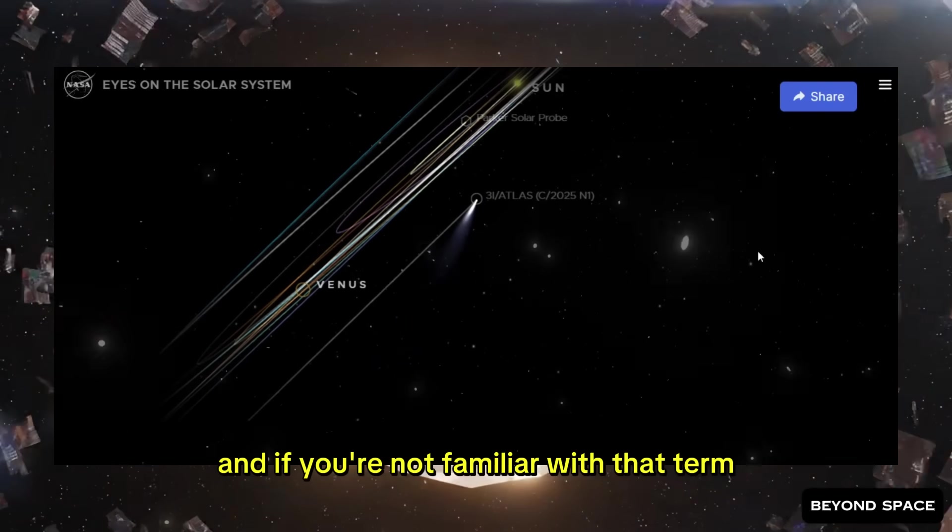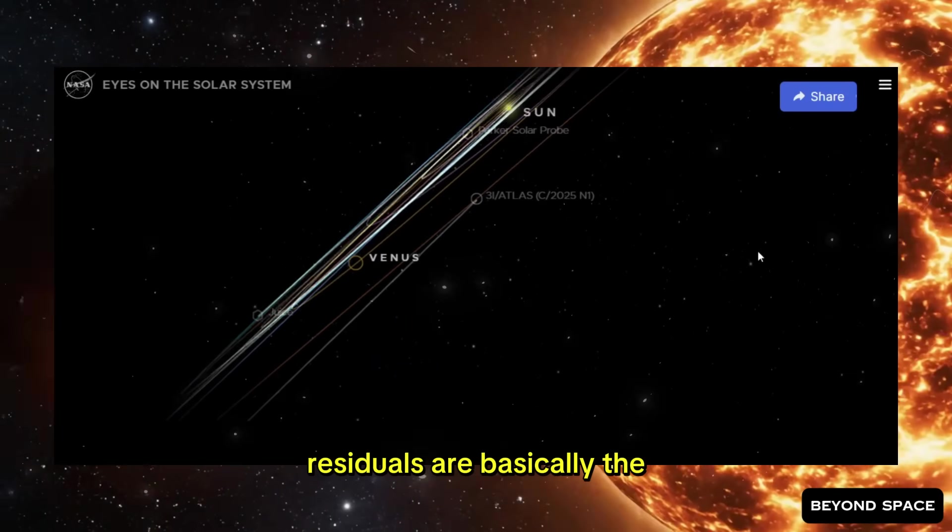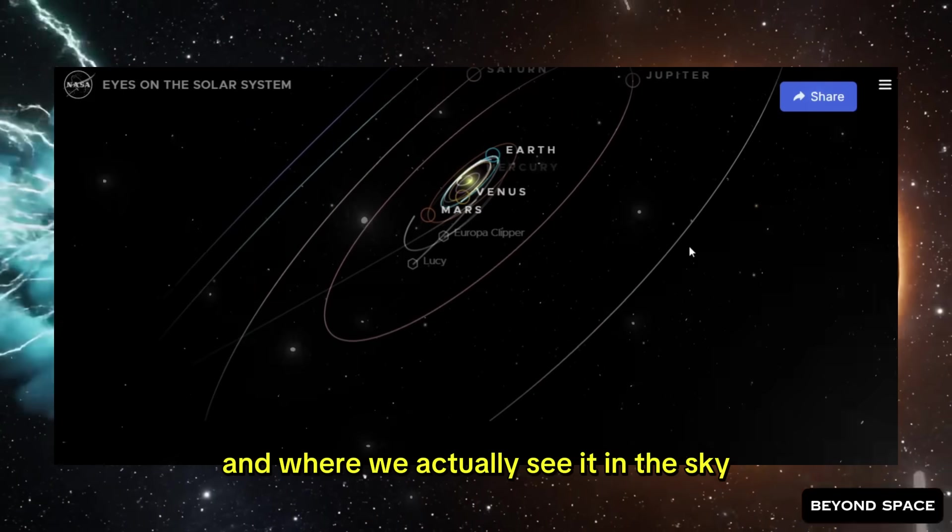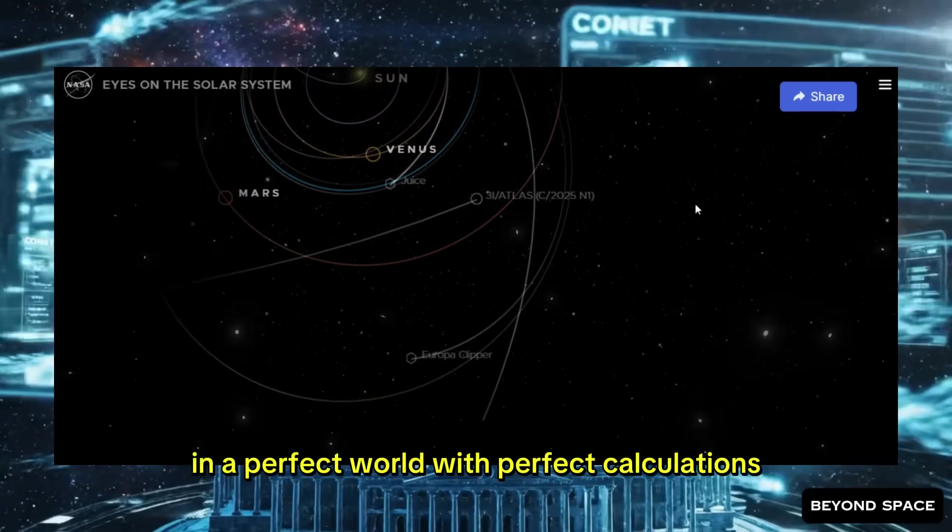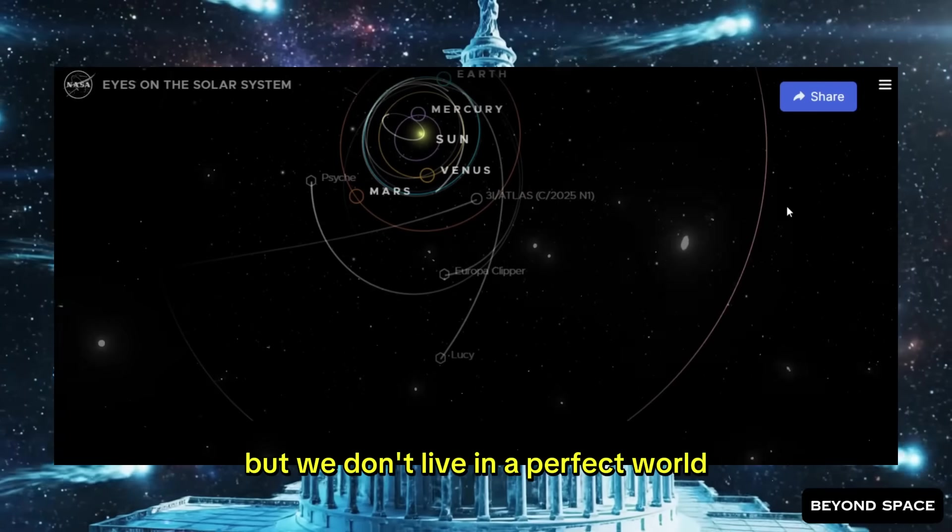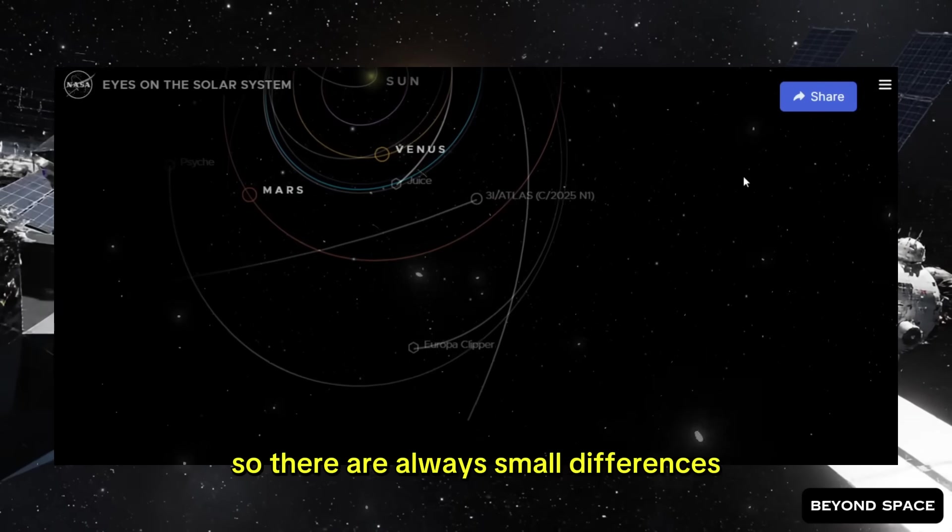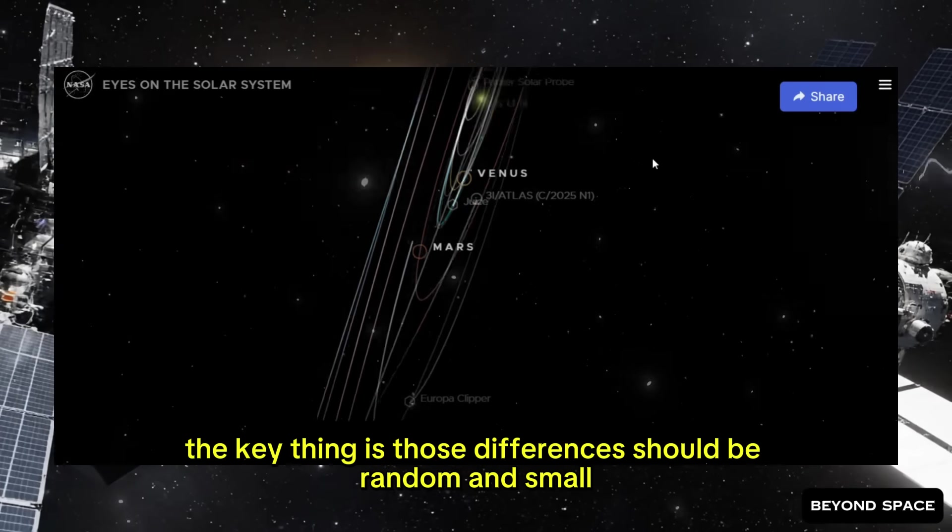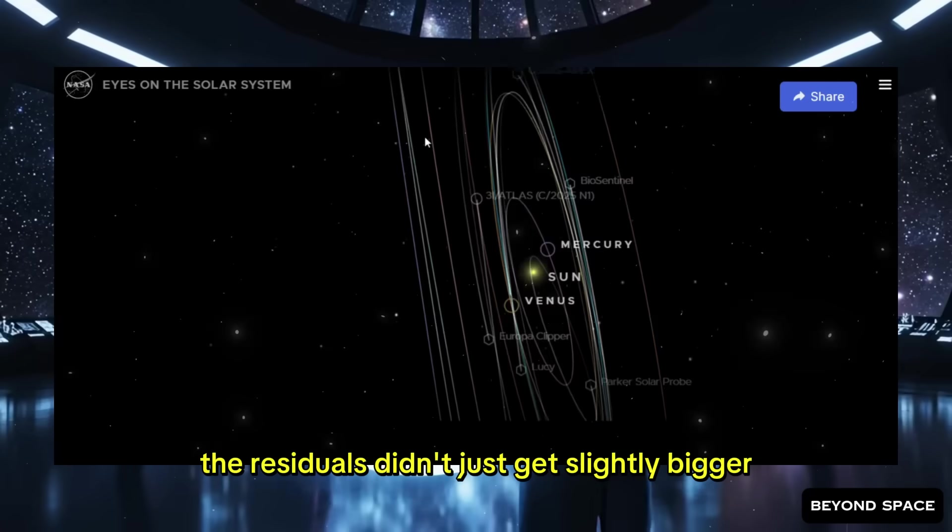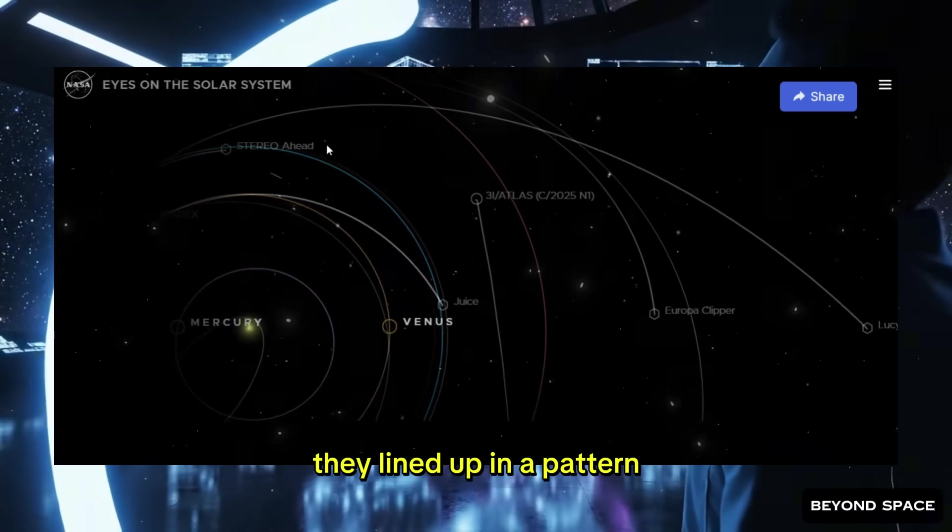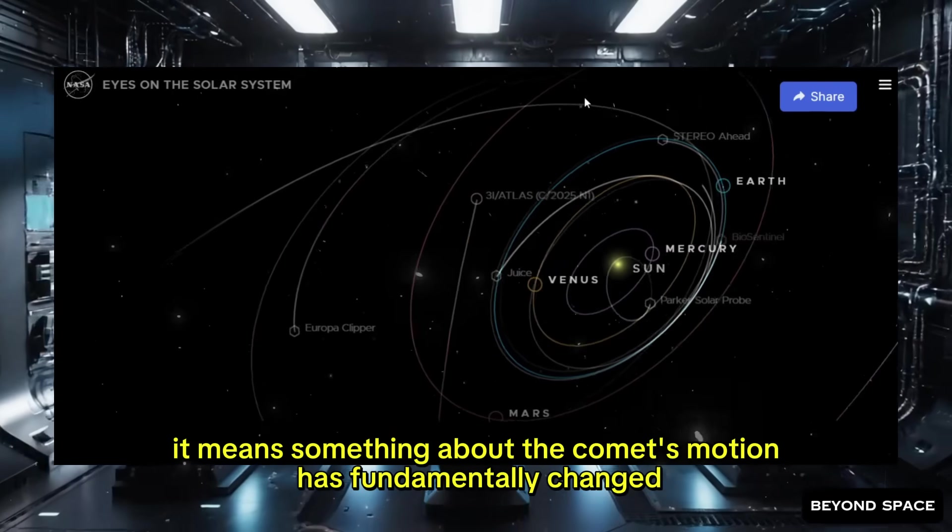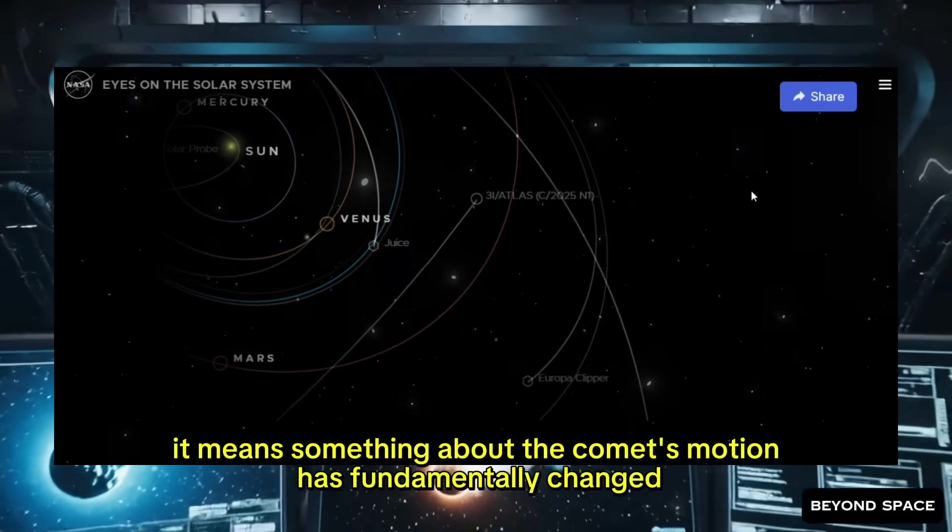The residuals started acting weird. And if you're not familiar with that term, residuals are basically the tiny differences between where the math says the comet should be and where we actually see it in the sky. In a perfect world with perfect calculations, those residuals would be zero. But we don't live in a perfect world, so there are always small differences. The key thing is, those differences should be random and small.